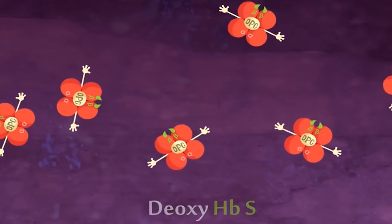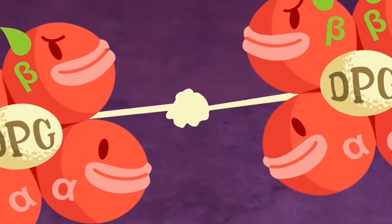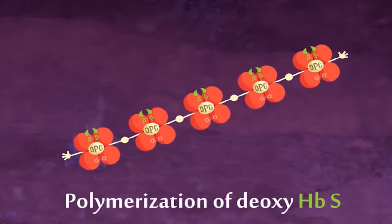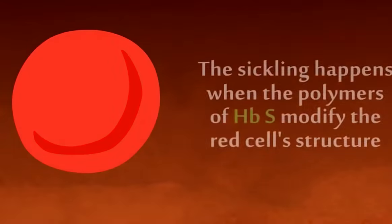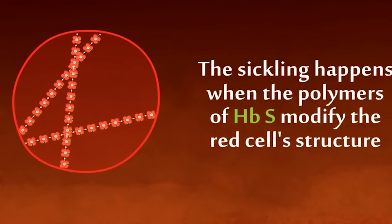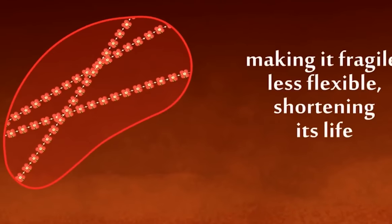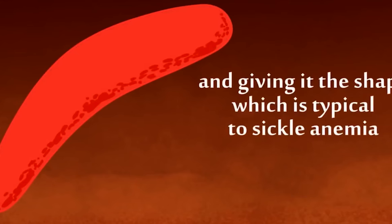This defective type of hemoglobin aggregates together in deoxygenated states, forming rods of hemoglobin inside the red blood cells. These rods then change the shape of red cells, making them look like pointed sickles — hence the name sickle cell disease.